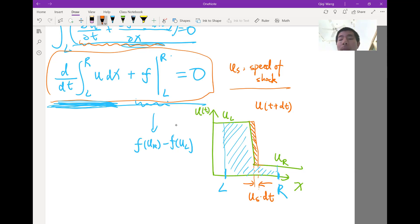And the rate of increase is of course the amount of increase, which is the area of this rectangle. The area of the rectangle is the height, ul minus ur, times width, which is us times dt. That's the area of the rectangle. That's how much it has increased over a time of dt. That's the rate of increase. That's actually d/dt of the integrated u.